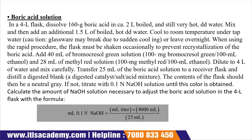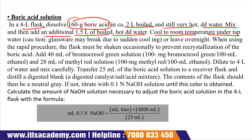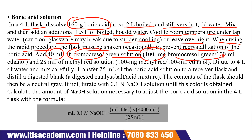For boric acid solution, take a 4-liter flask, add 160 grams of boric acid and 2 liters of very hot boiled deionized water, mix, then add an additional 1.5 liters of hot double-distilled water. Cool to room temperature under tap water, being careful that the glassware does not break from sudden cooling. Leave overnight. When using the rapid procedure, shake the flask occasionally to prevent recrystallization of boric acid. Then add 40 ml of bromocresol green solution, prepared by dissolving 100 mg of bromocresol green in 100 ml of ethanol.